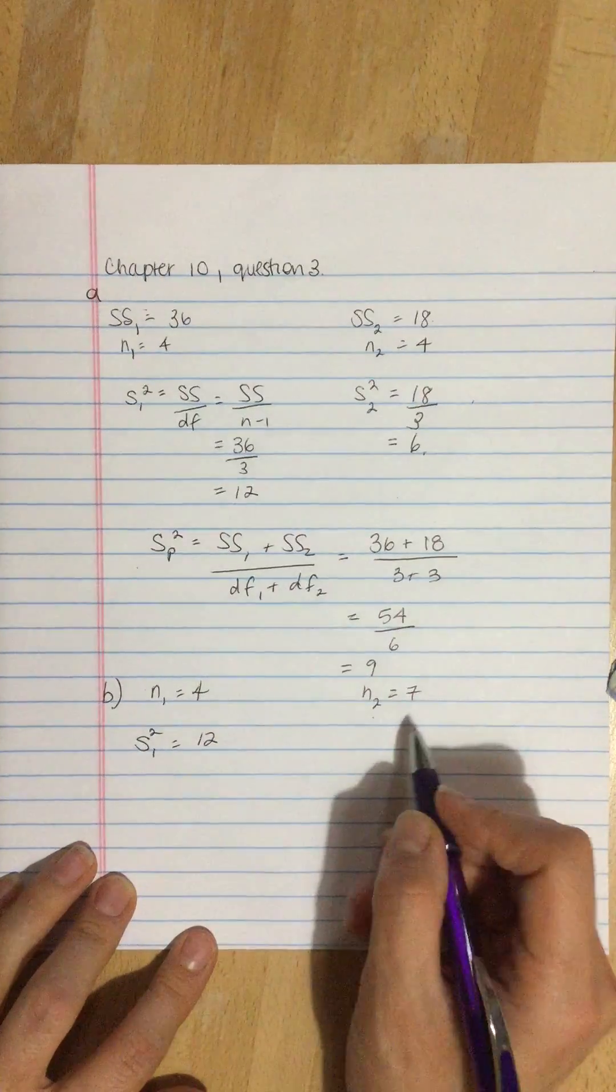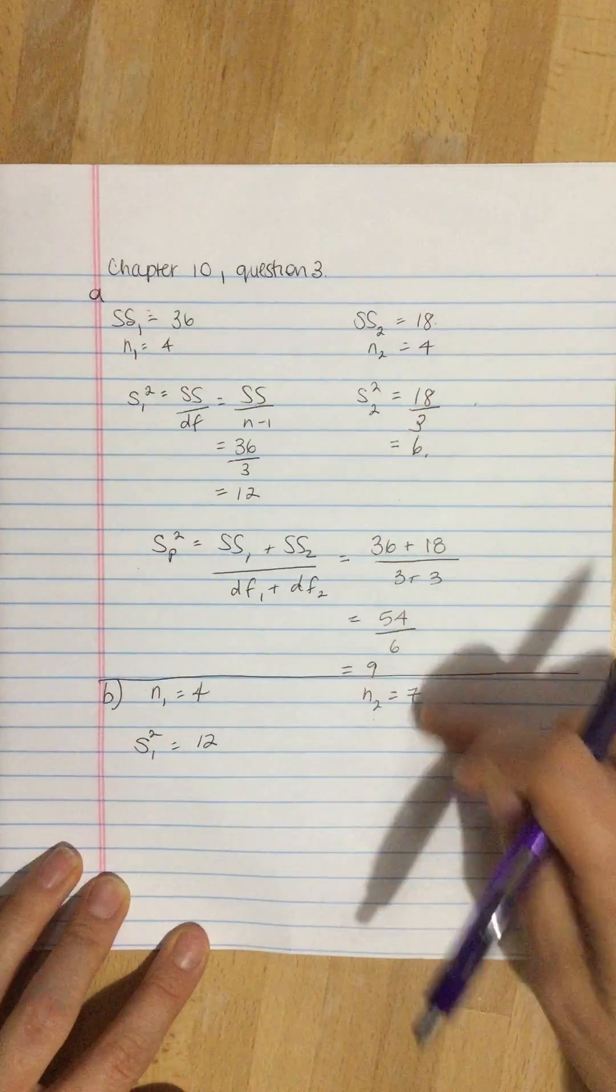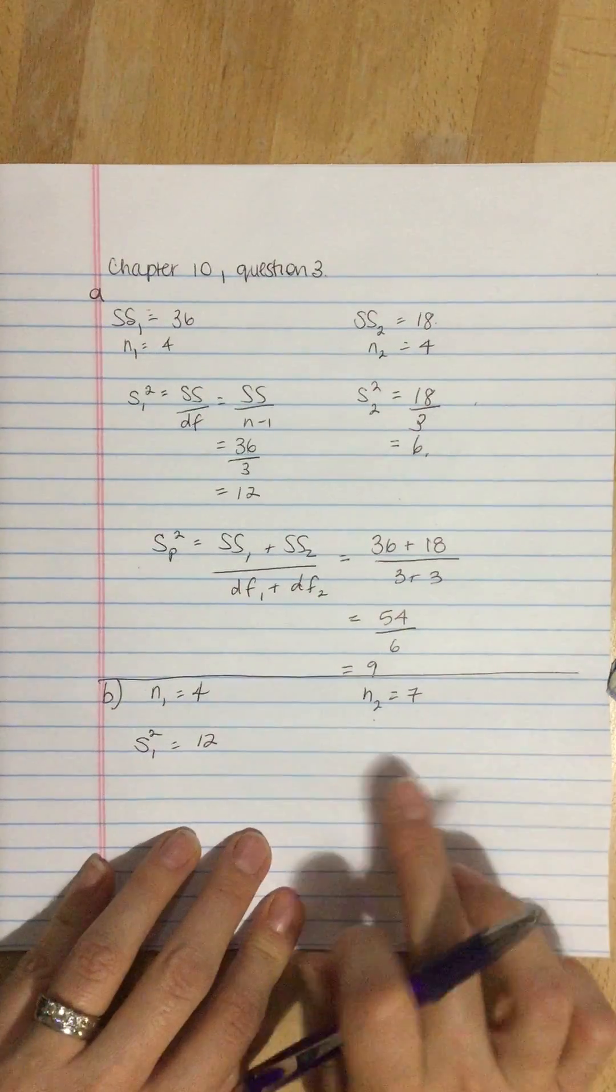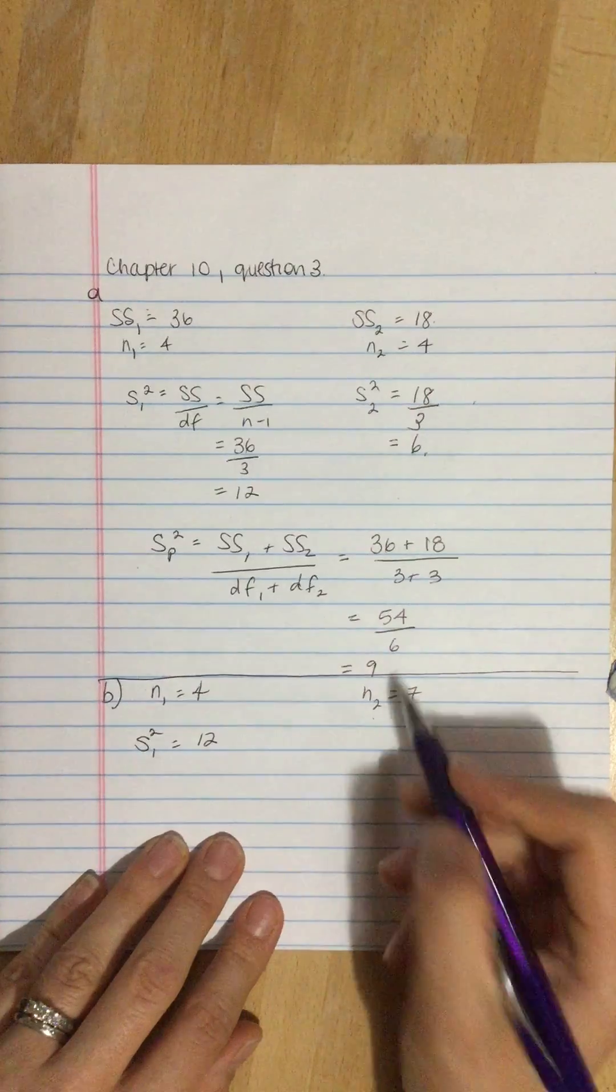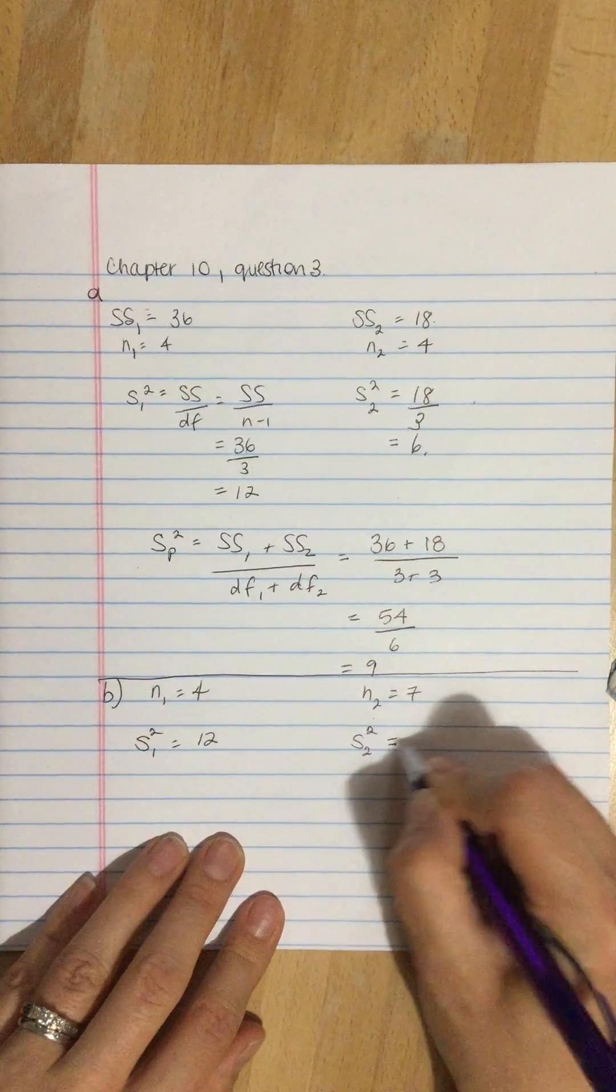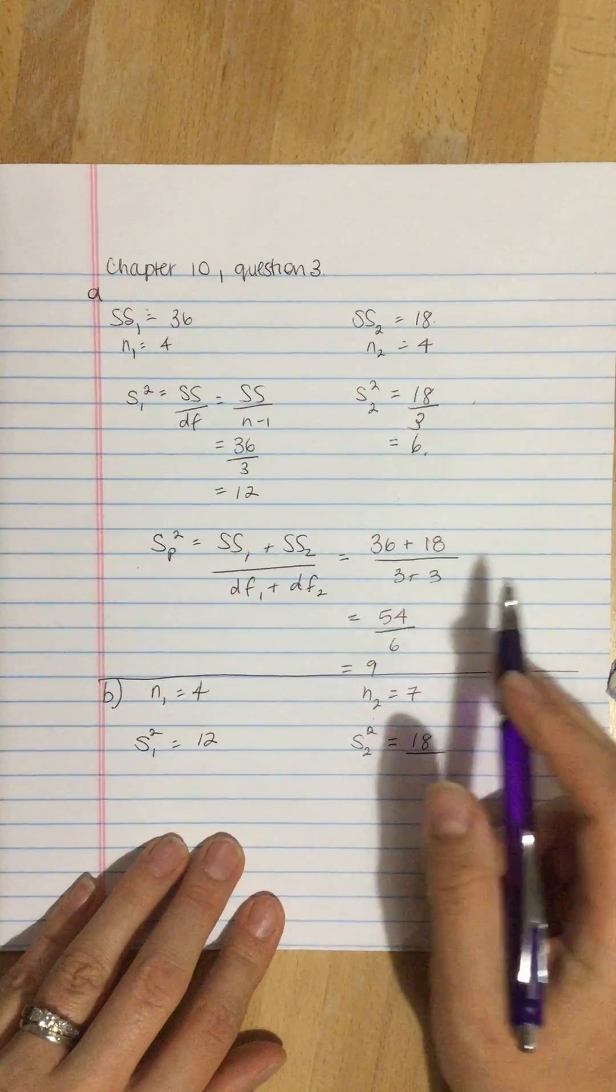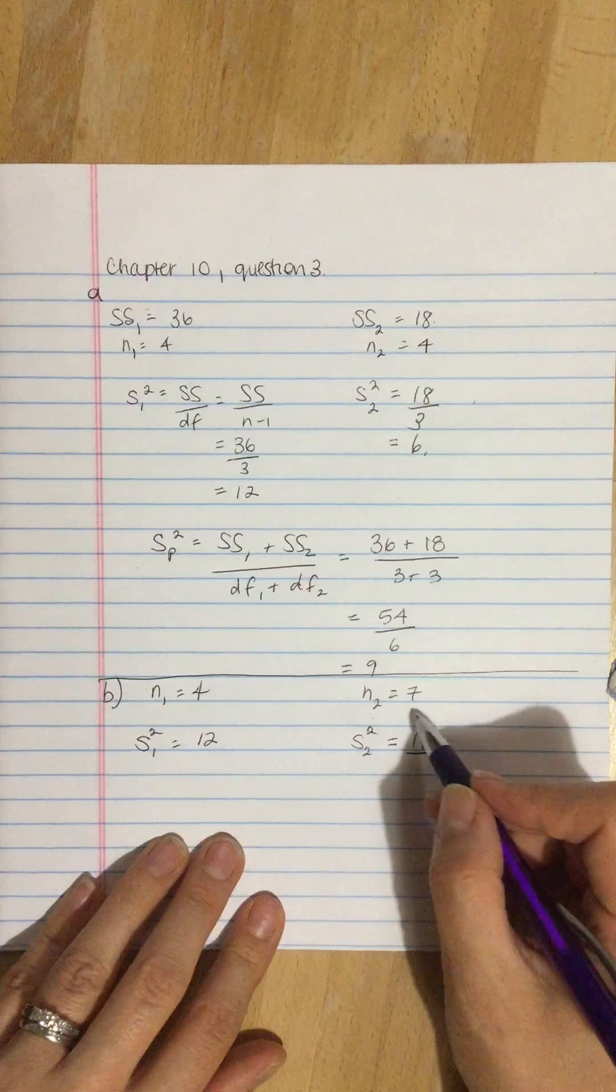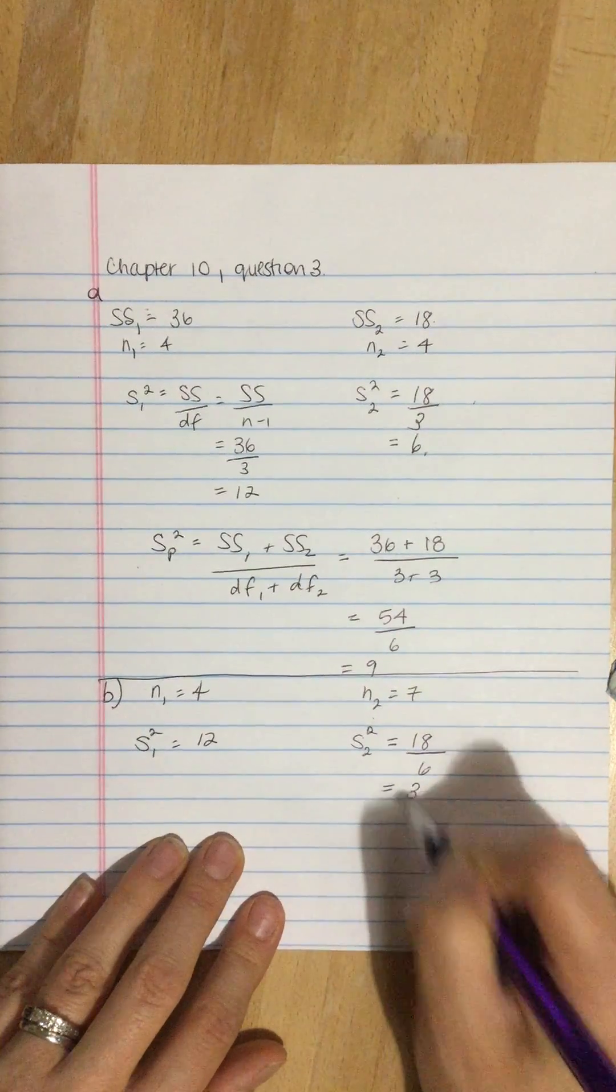For the other, draw a line there to separate A from question B. We do have to recalculate this though, because the sample size has changed. So we're going to take the variance is equal to 18, but now n minus 1 is 7 minus 1. It's 6. So that's now 3.